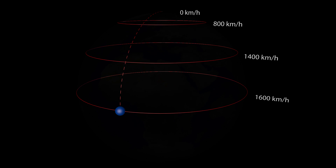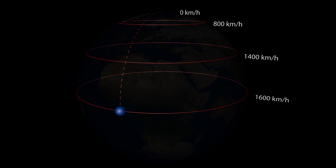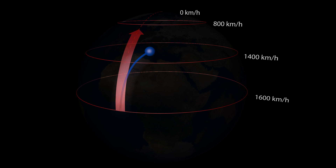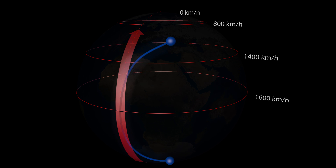Imagine a fluid particle travelling at a constant eastward velocity at the equator. If this particle now moves towards the north, its eastward momentum is greater than that of a particle already located on the Earth farther north. The particle therefore appears to be deflected to the right. Conversely, a particle in the Southern Hemisphere is deflected to the left.